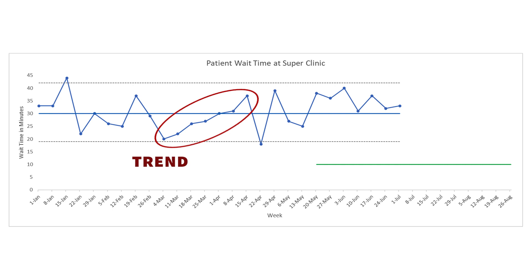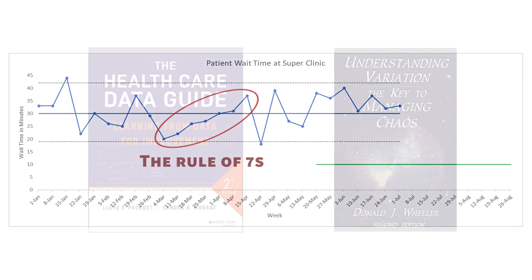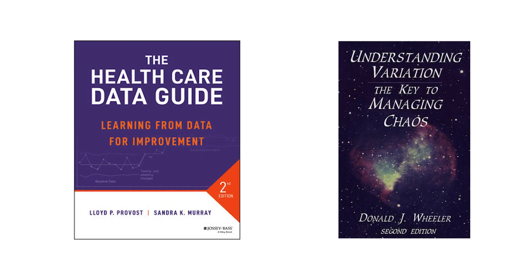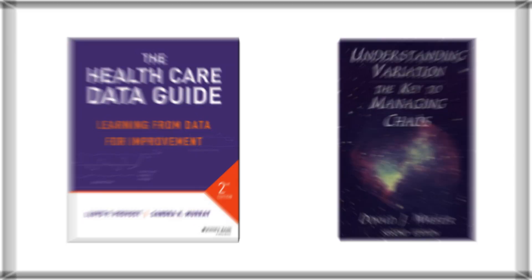The third most common indicator is called a trend — this is when you have seven or more consecutive points trending upward or downward. Statistical rules actually say it could be six, seven, or even eight depending on your data type. The rule of sevens is just an easy and safe rule to remember. If you're interested in the specific rules, feel free to review books such as The Healthcare Data Guide or Understanding Variation — both go much deeper into these concepts.